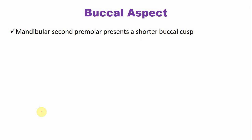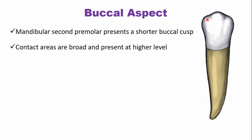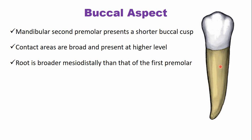From the buccal aspect, the mandibular second premolar presents a short buccal cusp. The buccal cusp is shorter and less pointed — less sharp — compared to the first premolar. Both contact areas are more towards the occlusal surface and are nearly at the same level. The root is broader mesiodistally compared to the teeth anterior to the second premolar, such as the first premolar or the canine.